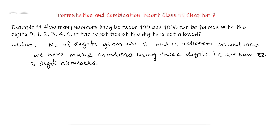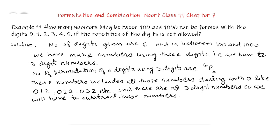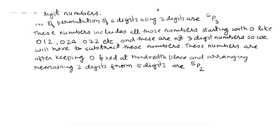We will have to subtract those digits from the digits made out of these 6 digits. Number of permutations of 6 digits using 3 digits are 6P3. And the number of permutations of those numbers starting with 0 are, if we fix 0 at 100th place and fill 10th and 1st place by the remaining 5 digits, that is 1, 2, 3, 4, 5, those will be 5P2.